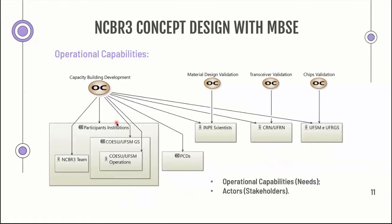The Nanosat CBR 3 concept design starts with the first layer of Arcadia, being the operational capability, which states the needs. At the top are capacity building development, material design validation, transceiver validation, and chips validation. The operational entities include the PCDs — data collection platforms on the ground — and the stakeholders in CRN and the universities.